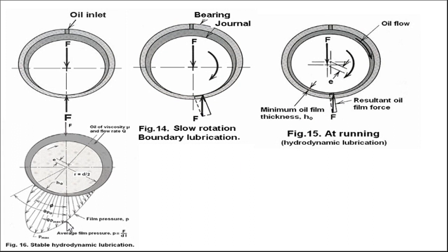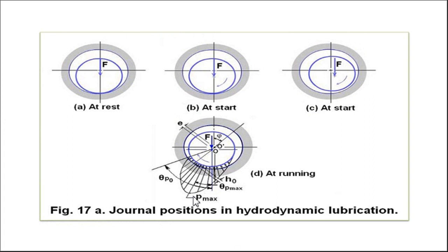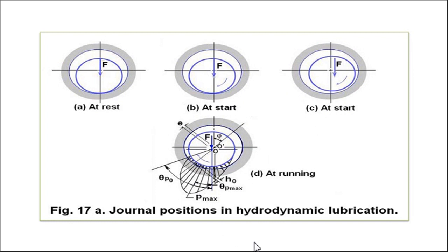You can see the pressure distribution at different positions. When the shaft is at rest, the journal and bearing are in one position; at the start of rotation they are in another; and after some time they are in yet another position. We will discuss these steps in detail one by one.